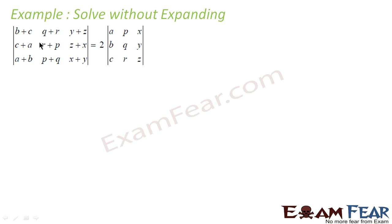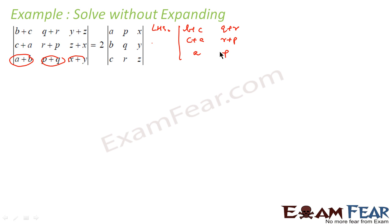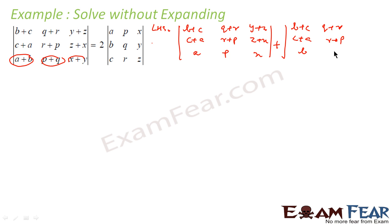Taking the LHS only - let me break this. This becomes q plus r, r plus p, p plus q, and z plus x, x plus y, y plus z. This is a trial method because we know we have to break it. This will also be b plus c, c plus a, a plus b. We are breaking it - that's all we are doing. This becomes my determinant expressed as the sum of two determinants.